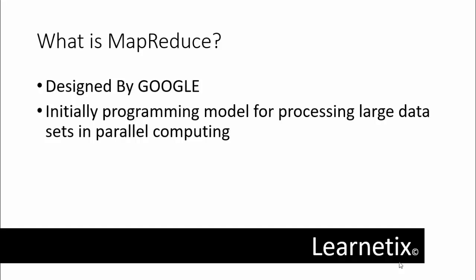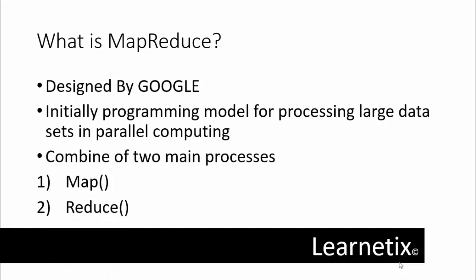MapReduce comprises two functions: first is map and second is reduce. The map procedure performs filtering and sorting operations on data, whereas the reduce procedure performs a summary operation. This model is based on modified concepts of map and reduce functions commonly available in functional programming. The library where these procedures belong is written in many different languages such as Java, Python, and others.